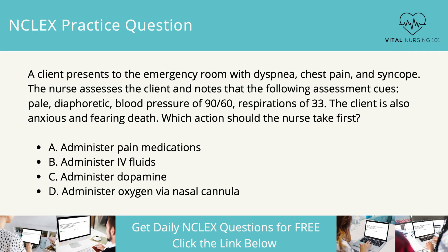A client presents to the emergency room with dyspnea, chest pain, and syncope. The nurse assesses the client and notes the following: pale, diaphoretic, blood pressure of 90/60, respirations of 33. The client is also anxious and fearing death. Which action should the nurse take first? Administer pain medications, administer IV fluids, administer dopamine, or administer oxygen via nasal cannula.